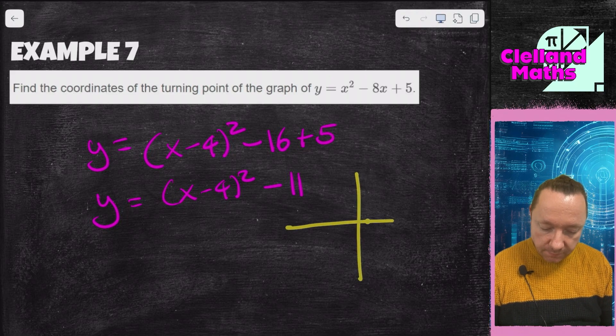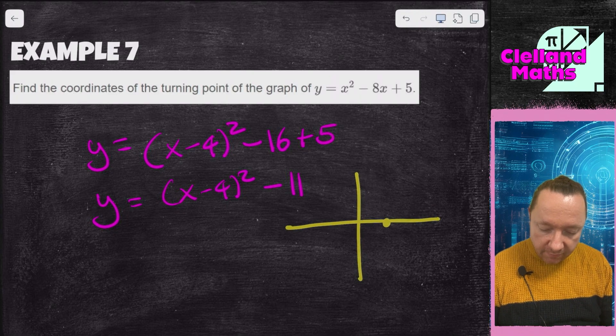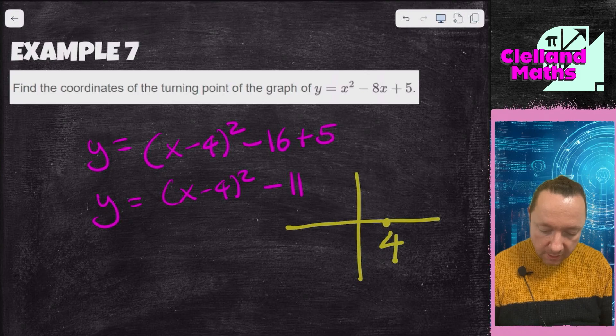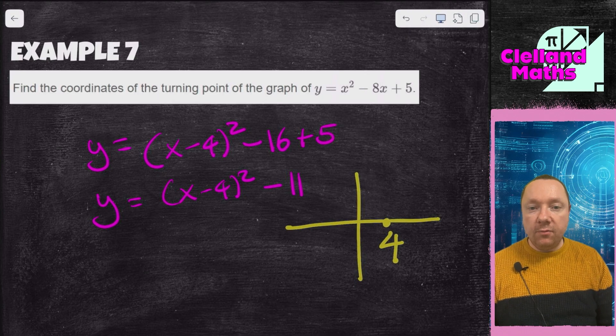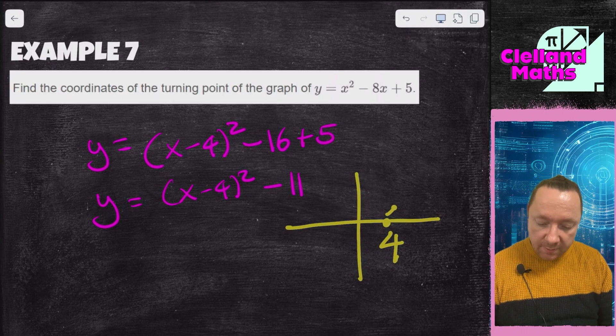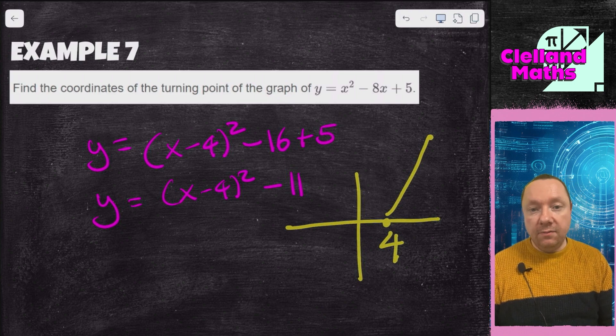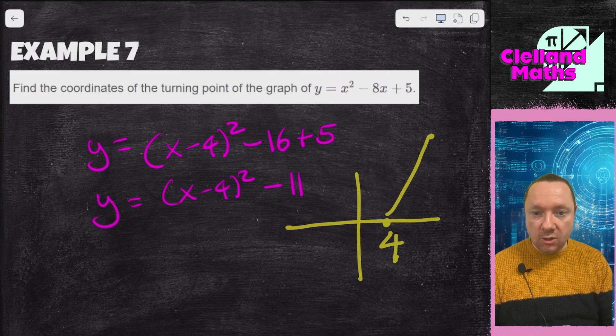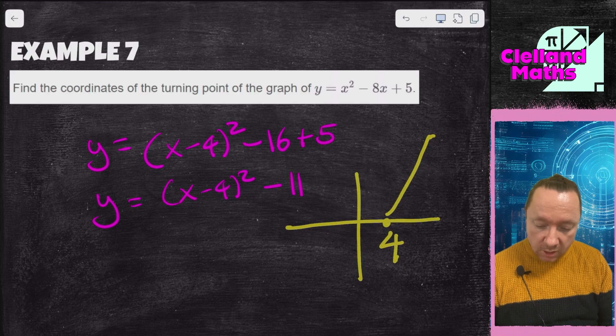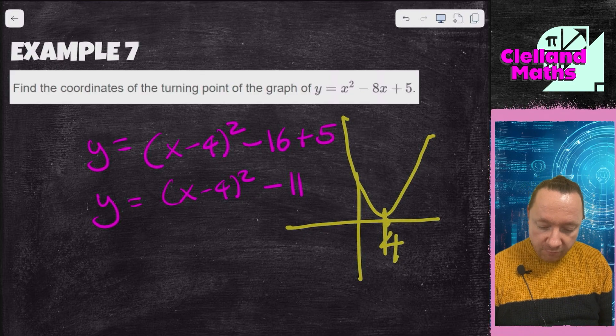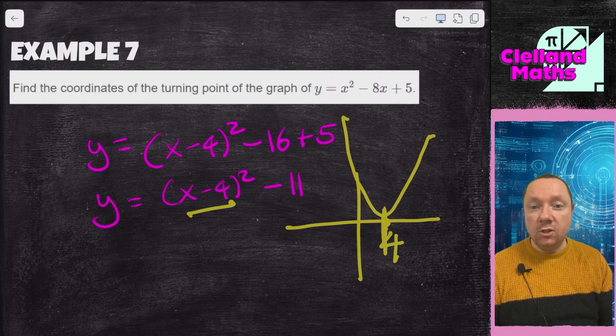So imagine a turning point. If I was to take this number as being 4, a number after 4 I'd get 5, 6, 7, 8, it would keep getting bigger. And a number before 4 I would get like 3, 2, 1, 0, minus 1, minus 2, but when you square that you get positive numbers. So it's going to go like that. At 4 is where it's going to turn because 4 minus 4 is 0, it's the smallest it ever is.